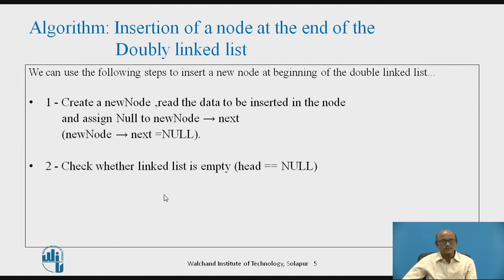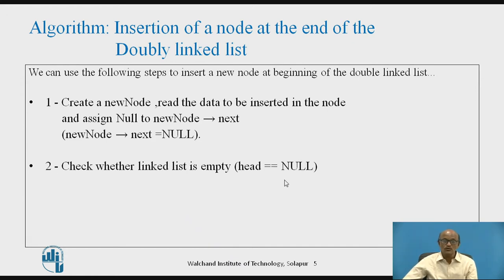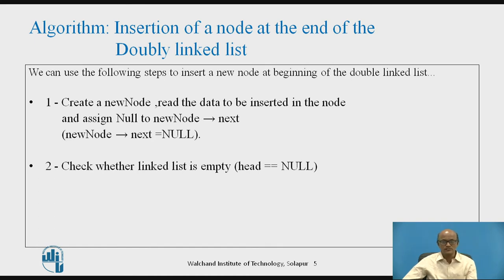The second step is to check whether the list is empty or not. If head is equal to null, meaning the head pointer does not point to any node, then the list is empty. If the list is empty, the node we are about to insert will become the first node.